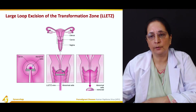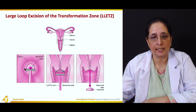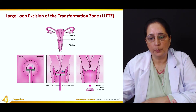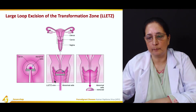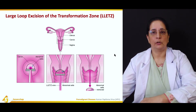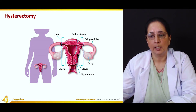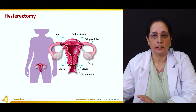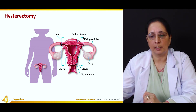Large loop excision of the transformation zone uses a wire-shaped loop instrument that is inserted over the lesion to remove abnormal cells. Hysterectomy is the removal of the uterus. The tubes and ovaries are not removed — they are preserved. Only the uterus is removed.